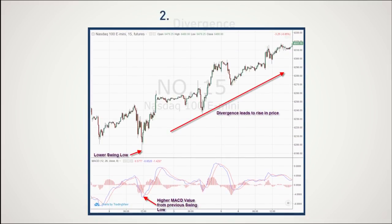Two: Divergence. MACD also gives divergence signals. For example, if you see the price increasing and the indicator recording lower tops or bottoms, then you have a bearish divergence.